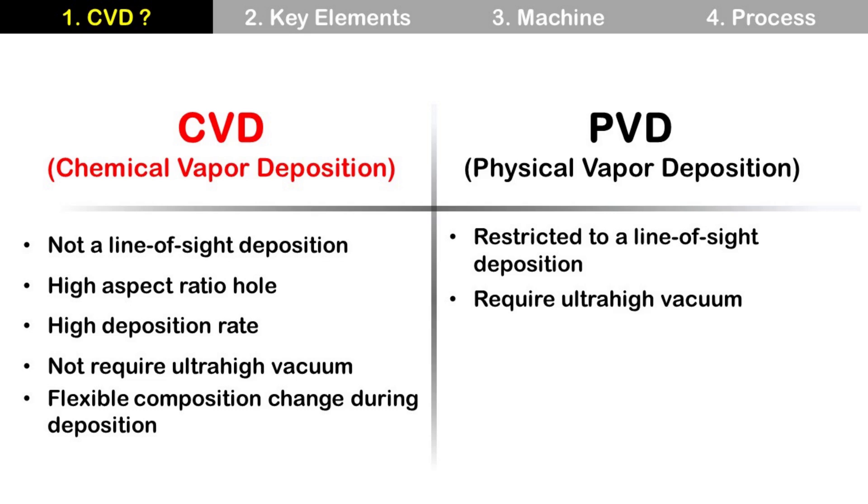Line-of-sight means there is no obstacle on the way of straight paths between vapor and deposition source. So when vapor and deposition source can see each other without any blocking, we can say this situation is line-of-sight.